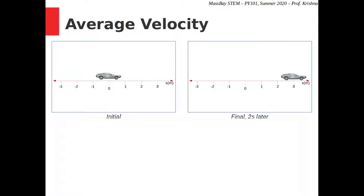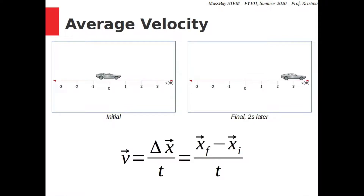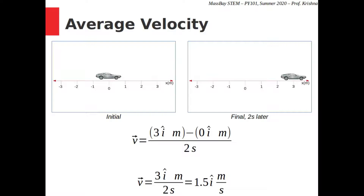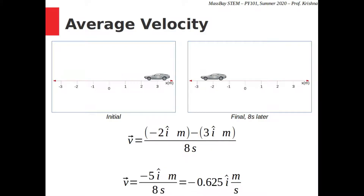There are two types of velocity. We can take the displacement of an object across two photos and divide by the elapsed time — symbolized as displacement over time, or equivalently final position minus initial position over time. This yields average velocity. Since the car traveled 3 î meters in 2 seconds, its average velocity is 1.5 î meters per second. If the car traveled from 3 î meters to negative 2 î meters in 8 seconds, its velocity is negative 0.625 î meters per second.